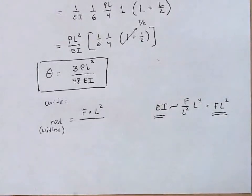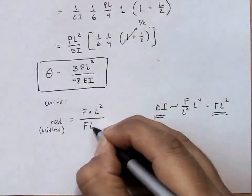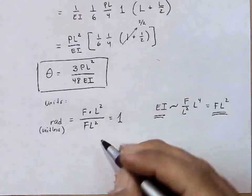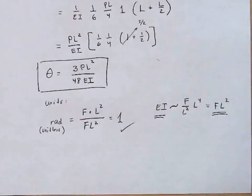So we're dividing by EI here. And that indeed is a unitless quantity. So the units check out. We're happy with this.